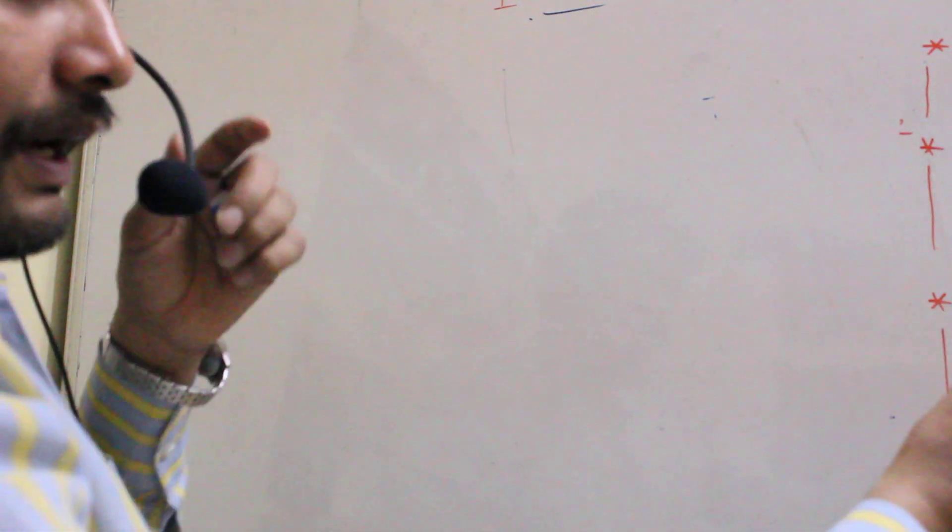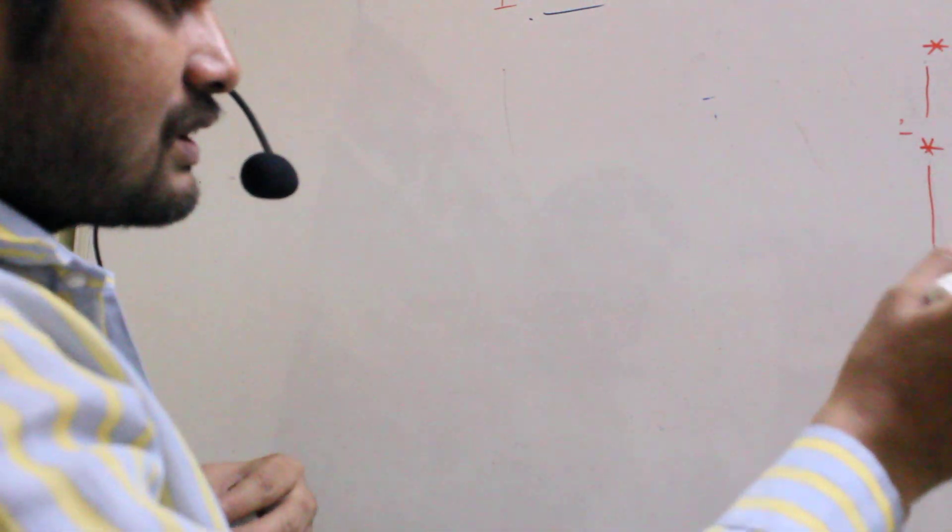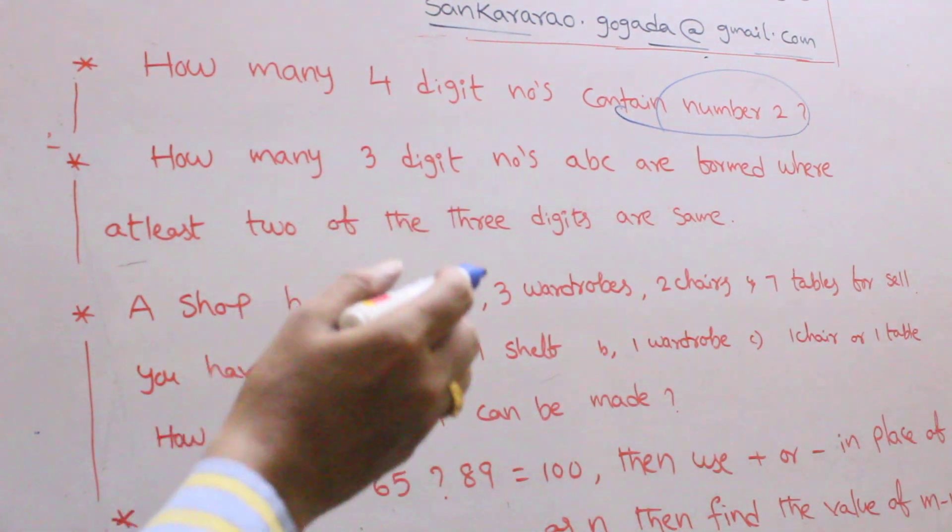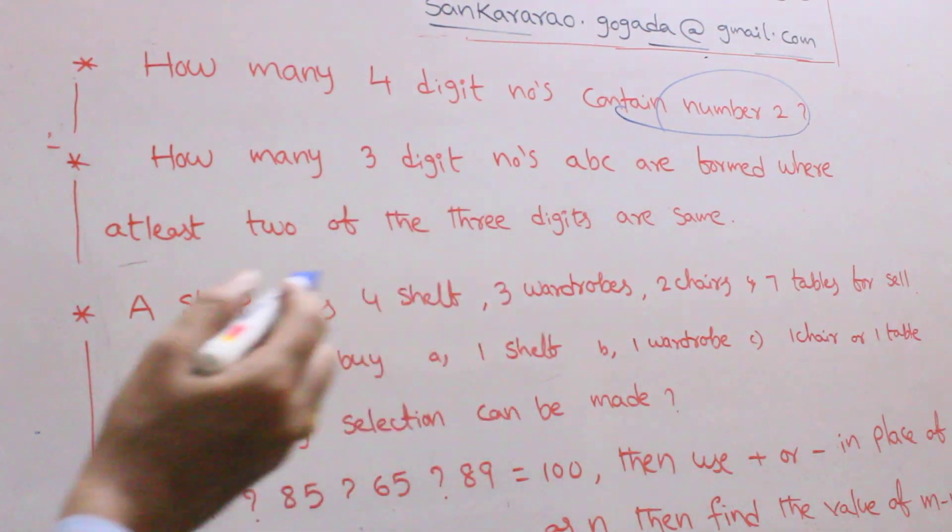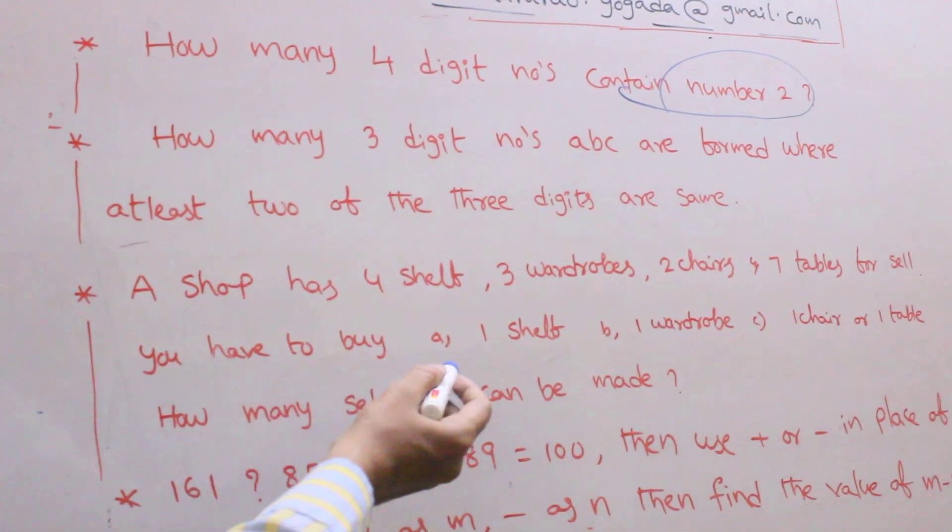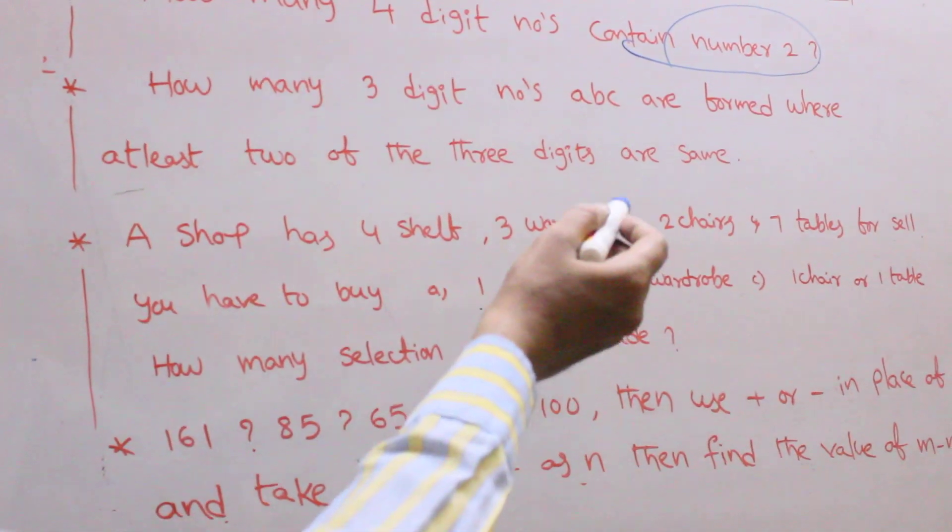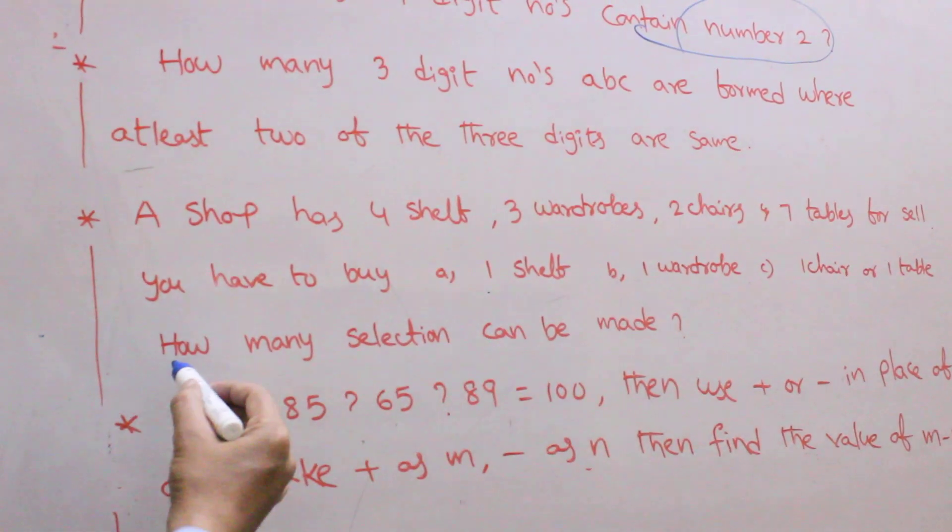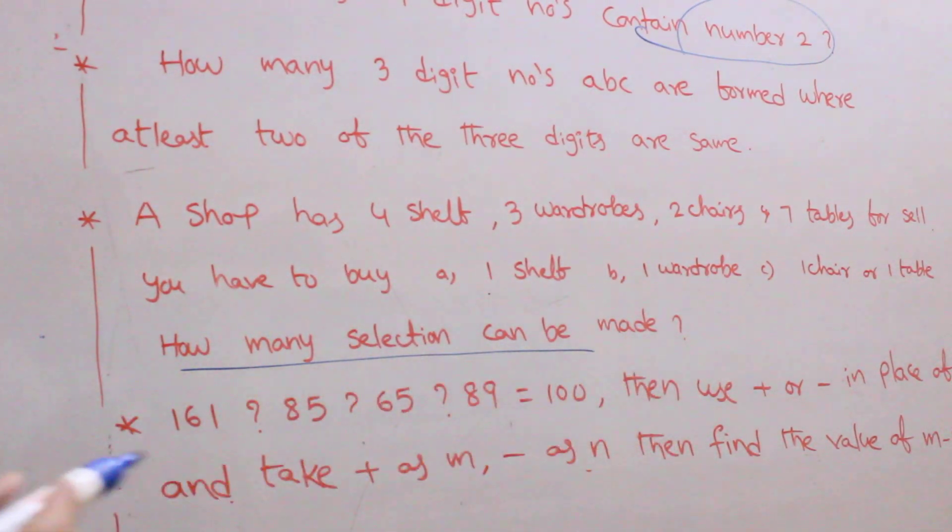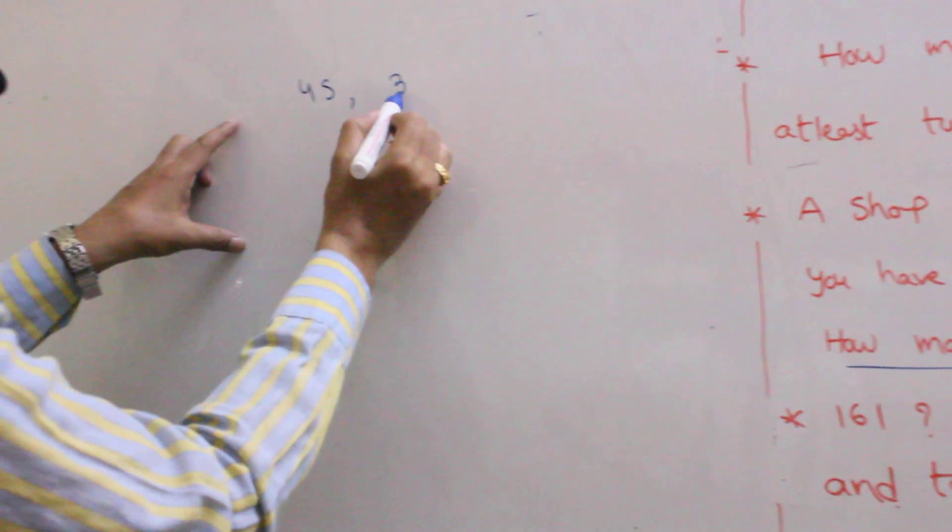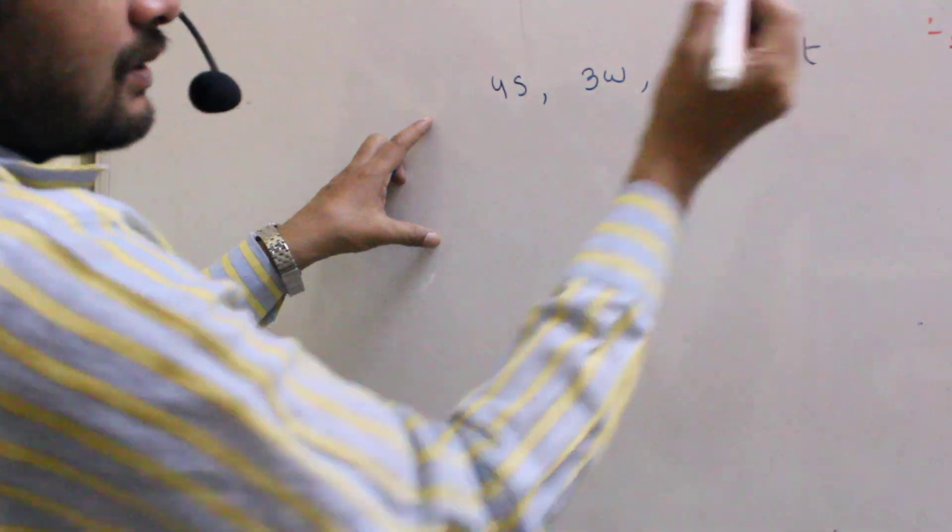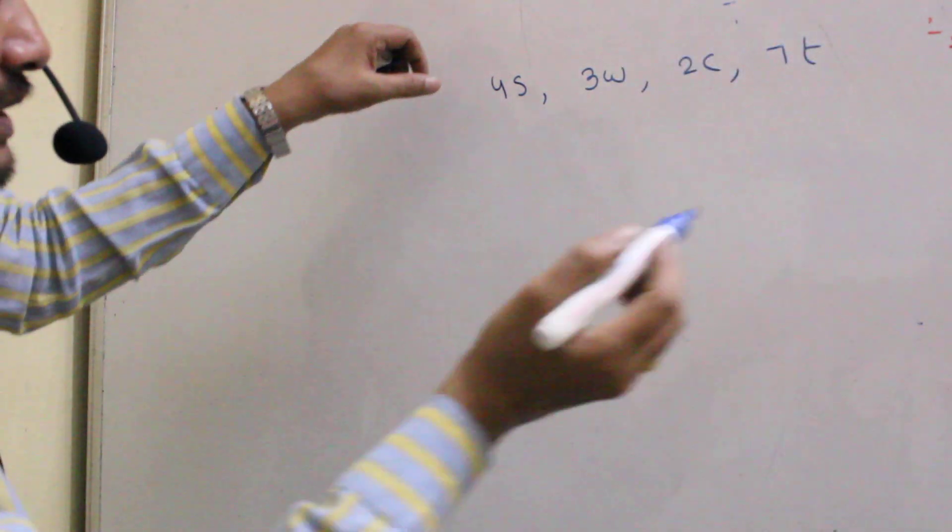Next coming to the next question. A shop has 4 shelves, 3 wardrobes, 2 chairs and 7 tables. For shelves, we have to buy the first one shelf, one wardrobe, one chair or one table. How many selections can be made? 4 shelf, 3 wardrobes, 2 chairs, 7 tables.